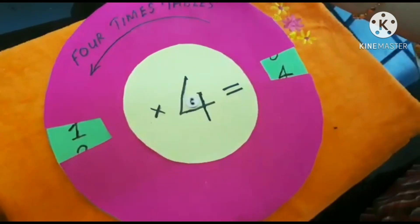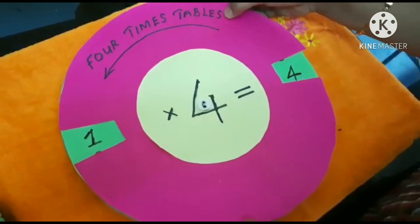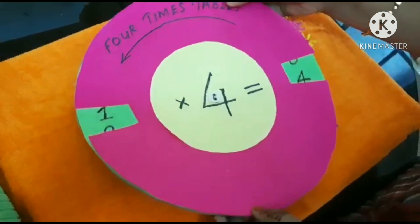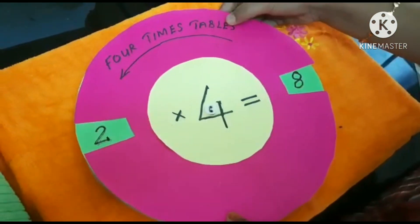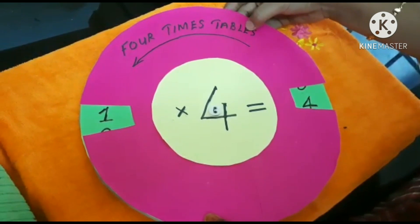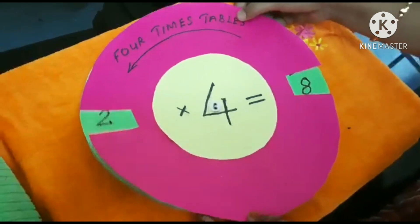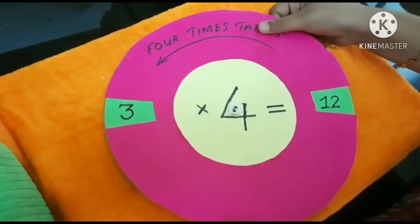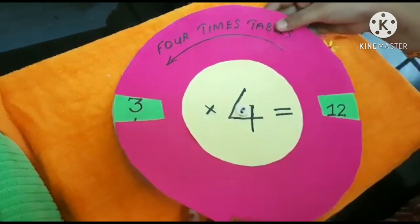This is the model of multiplication table. 1 into 4 is 4. 2 into 4 is 8. 3 into 4 is 12.